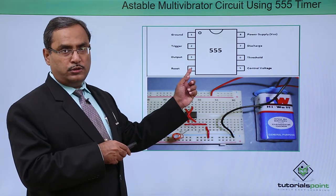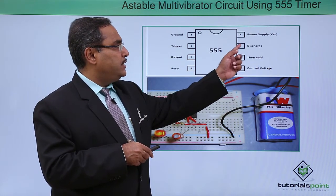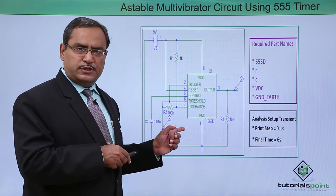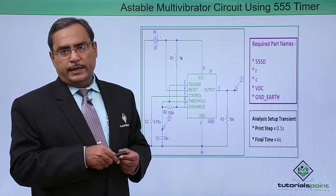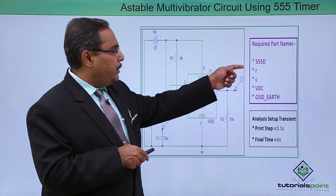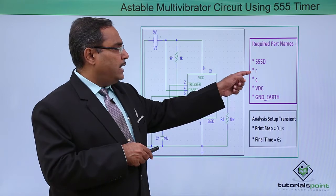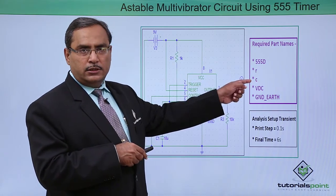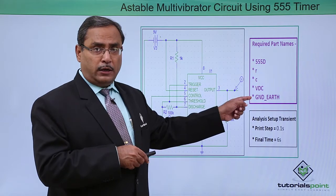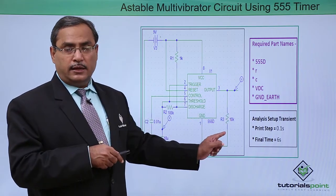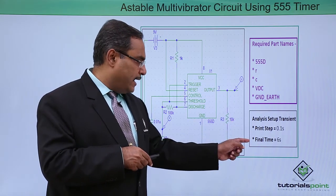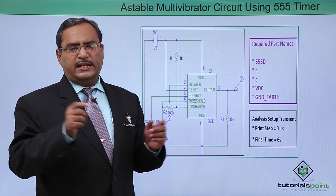Pins 5 through 8 are control voltage, threshold, discharge, and power supply. The same circuit has been drawn in PSPICE software. The required parts are: 555D for the timer IC, R for resistors, C for capacitors, VDC for DC voltage source, and ground earth. In the analysis setup, the print step is set to 0.1 second and the final time is 6 seconds, so we can observe 6 complete cycles.